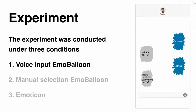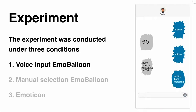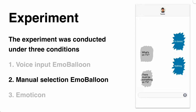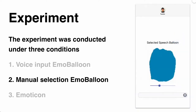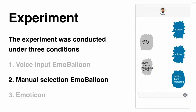In the condition where speech balloons were automatically generated according to voice input, we developed a text chat application using voice input. When the user speaks a message, the application detects the speech content and the volume of the user's voice and then automatically generates a speech balloon from the scaled volume. Under the condition where the user manually selects speech balloons, we developed a text chat application with traditional keyboard text input, where the user manually enters text and then selects the speech balloon they think is most appropriate to convey their emotion.